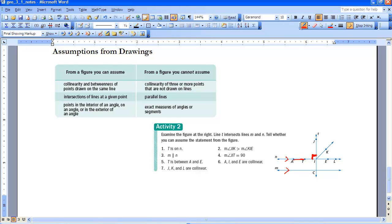The other thing is this segment appears to be longer than this segment. We cannot assume that. We cannot assume that this has a measure of 4 and this has a measure of 6. None of that can be assumed. It all has to be given to us.